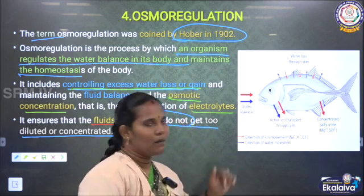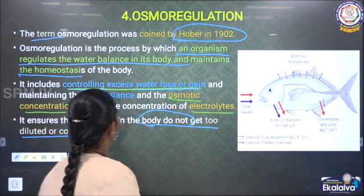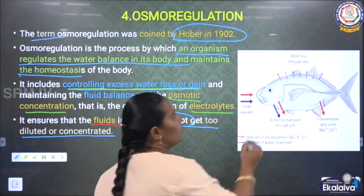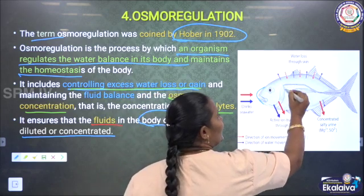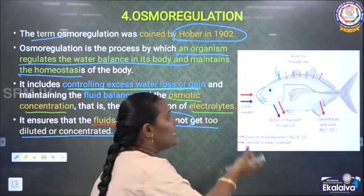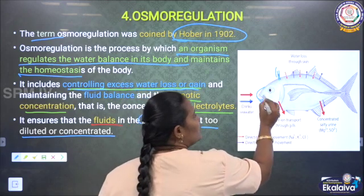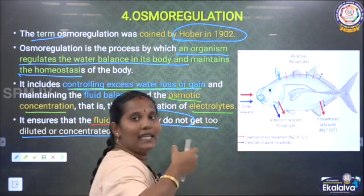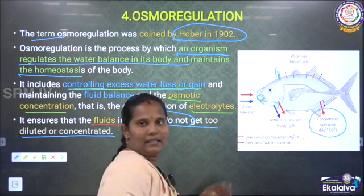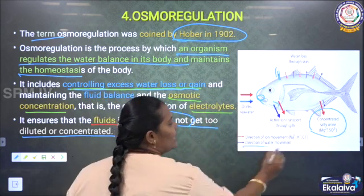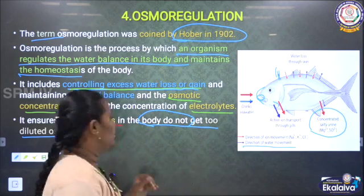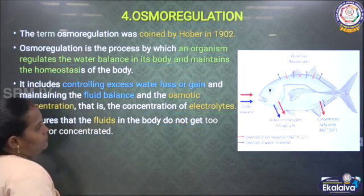We can give the example of marine water animals. In marine animals, water is lost through the skin. The same amount of water is taken in by that animal through the mouth and gills. They also send out the same amount of water. So they maintain the water level — the water loss and water gain are kept equal. This is osmoregulation in action.